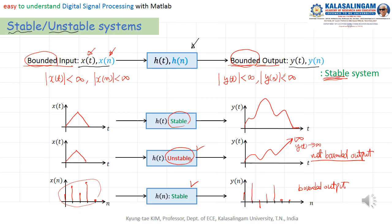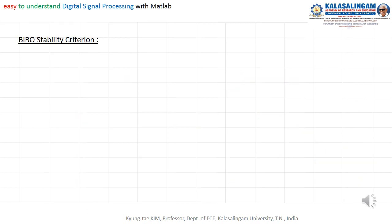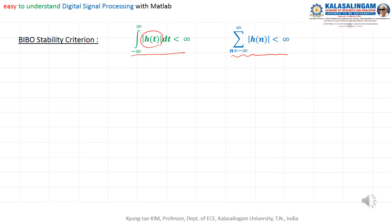In case of continuous time signals and also discrete time case, the impulse response summation — the summation of the impulse response should be a finite value, not infinite. This is the necessary and sufficient condition for the stability of systems.